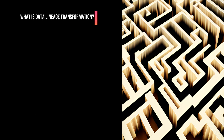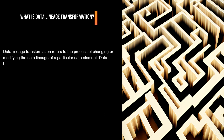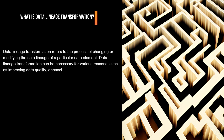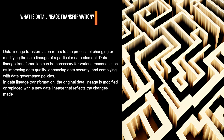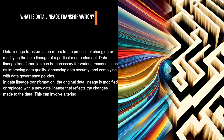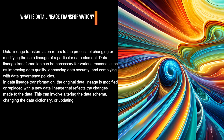What is Data Lineage Transformation? Data Lineage Transformation refers to the process of changing or modifying the data lineage of a particular data element. This can be necessary for various reasons, such as improving data quality, enhancing data security, and complying with data governance policies. In Data Lineage Transformation, the original data lineage is modified or replaced with a new data lineage that reflects the changes made to the data. This can involve altering the data schema, changing the data dictionary, or updating the metadata associated with the data.